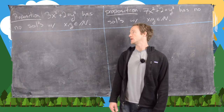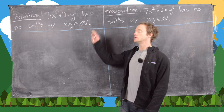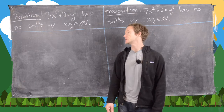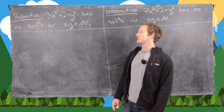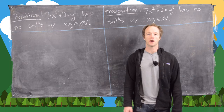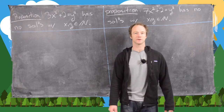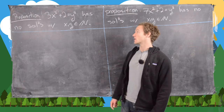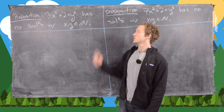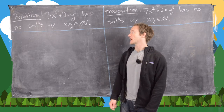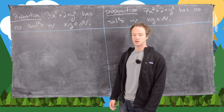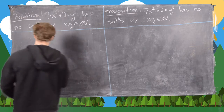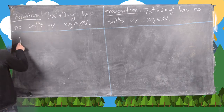In this video we're going to look at two nonlinear Diophantine equations and prove that they have no solutions over the natural numbers. The first one is 3x² + 2 = y², and we're going to do both of these by contradiction.